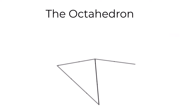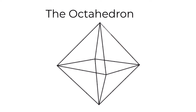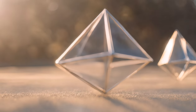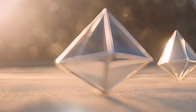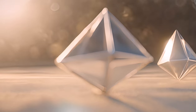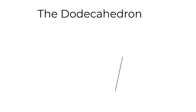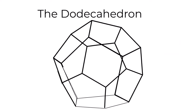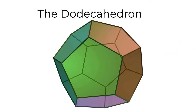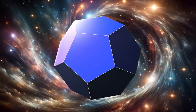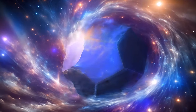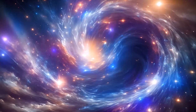The octahedron, with eight triangular faces, captures the essence of air with its light and airy structure, reflecting air's dynamic and ethereal nature. The dodecahedron, featuring 12 pentagonal faces, symbolizes the universe's cosmic ether, illustrating the intricate order and harmony of the cosmos.